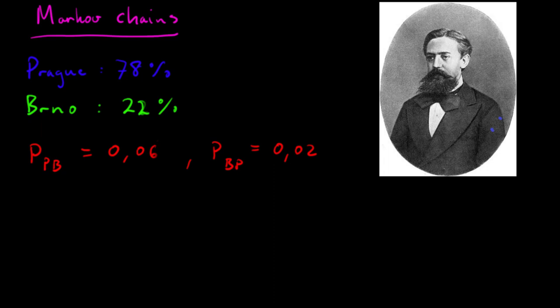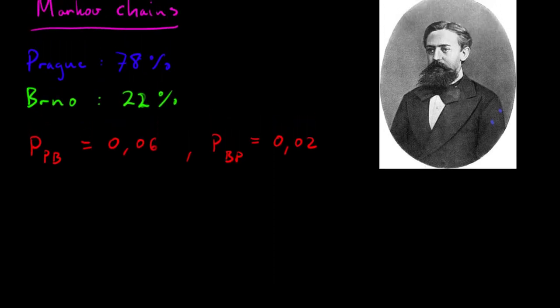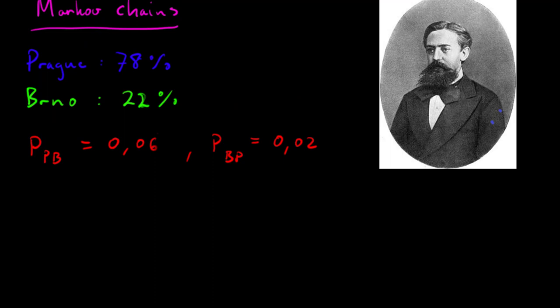So if we illustrate Brno over here, and then we have Prague over here, which I am going to use the letter C. Since Prague is the capital, I am going to use the letter C to illustrate that. The reason is that I am going to use the letter P for something else.